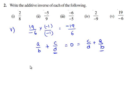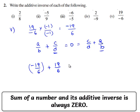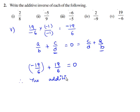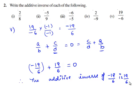Therefore the additive inverse of minus 19 by 6 is 19 by 6 because minus 19 by 6 plus 19 by 6 gives 0. Therefore the additive inverse of 19 by minus 6 is 19 by 6.